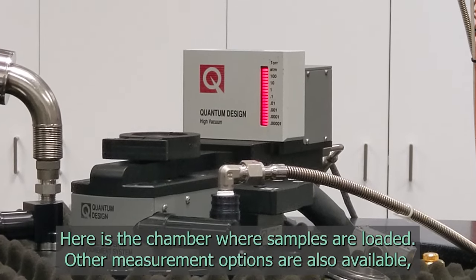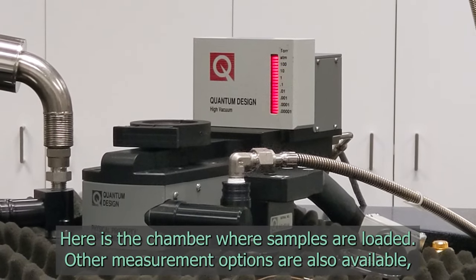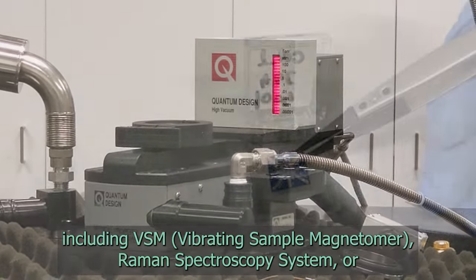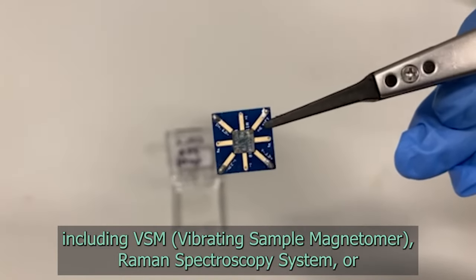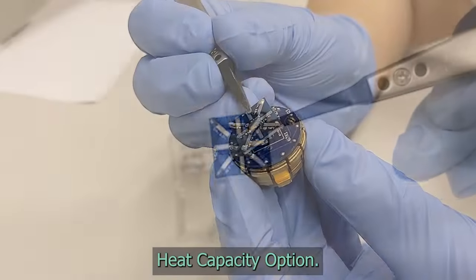Here is the chamber where samples are loaded. Other measurement options are also available, including VSM, vibrating sample magnetometer, Raman spectroscopy system, or heat capacity option.